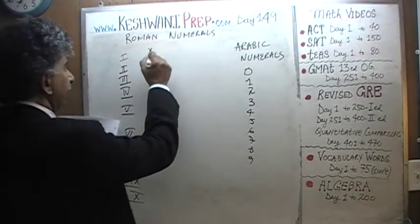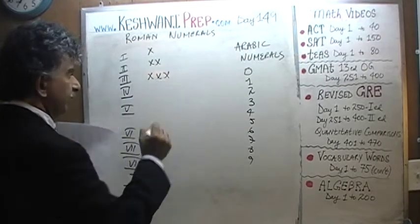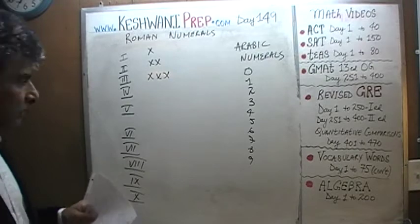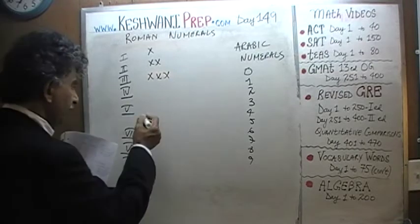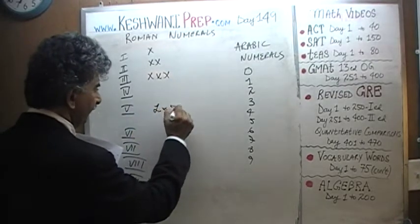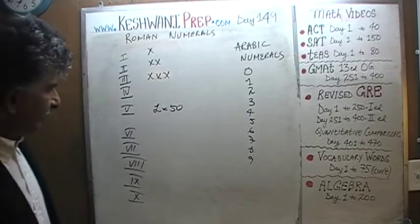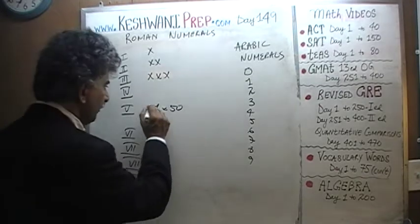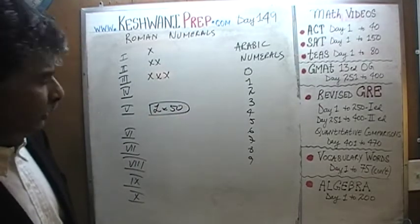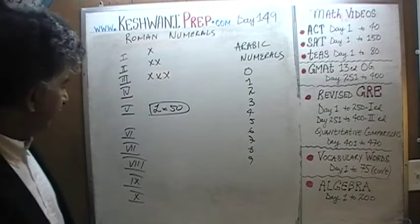Here is our 10, 20, 30. When we want to write 50, 50 is going to be L. L is 50. This is the part that you have to remember — there are some things you have to memorize. The symbol L is used for 50.